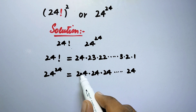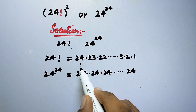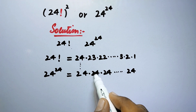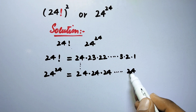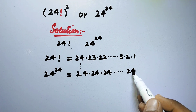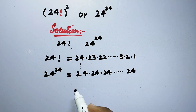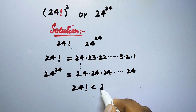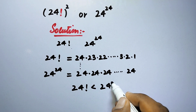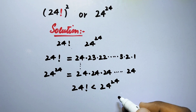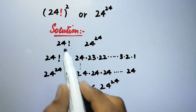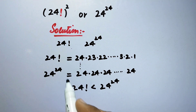We can compare directly: in 24 factorial we have 24, 23, 22... but in 24 to the power 24 every position is 24. So in this way we can see that 24 factorial is less than 24 to the power 24. But in our actual problem, we have 24 factorial to the power square.